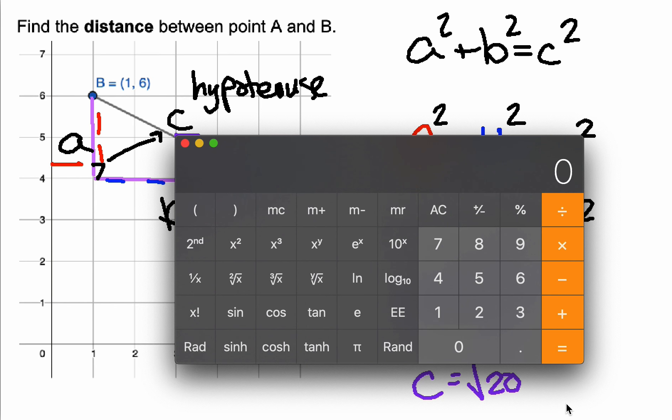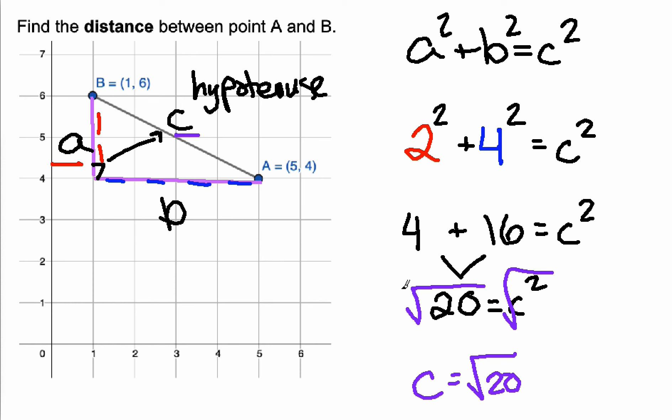Or if I want to put it in my calculator, I can do 20 square root, and it's around 4.47. C is the square root of 20.